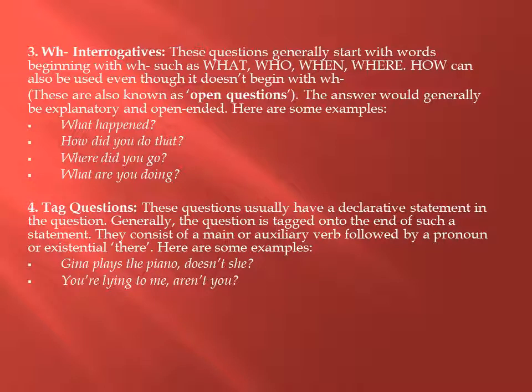You are lying to me — aren't you? Here 'are' is used as a helping verb which comes out and forms the tag at the end. Aren't you? There is something wrong with her — isn't there? Here 'is' is the helping verb and 'there' is the subject which follows the helping verb. Because it is an affirmative sentence, we have added 'not' there.